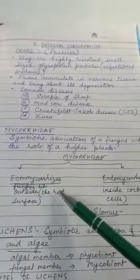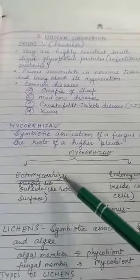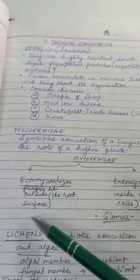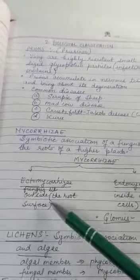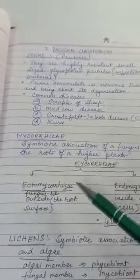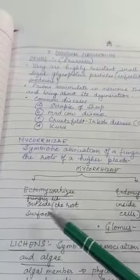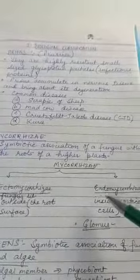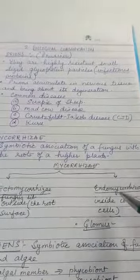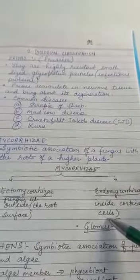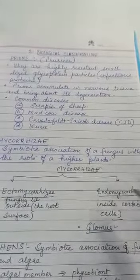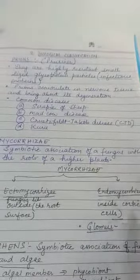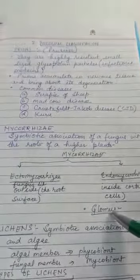Mycorrhiza can be of two types: ectomycorrhiza and endomycorrhiza. In ectomycorrhiza, as the name suggests, the fungus lies on the surface of the root of the plant. Mostly the fungus is present on the root surface outside, and only very few enter up to the cortex — present in the intercellular spaces. But in endomycorrhiza, most of the fungus is present inside the cortical cells, and only some are on the root surface. An example is Glomus, which is an endomycorrhiza fungus.